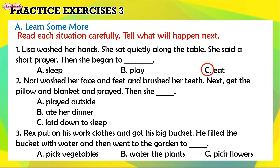2. Nori washed her face and feet and brushed her teeth. Next, she got the pillow and blanket and prayed. Then she... A. Played outside. B. Ate her dinner. C. Laid down to sleep. What is your answer? Correct — C. Laid down to sleep.